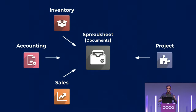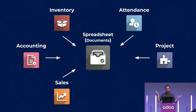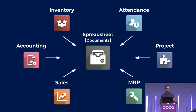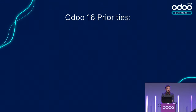For commission tracking, take the sales data and use multipliers and coefficients to calculate it. Any app where you have data — attendance, manufacturing work center productivity — you can feed that into spreadsheets. Basically, any app, any models in Odoo, you can feed into spreadsheets, and it's amazing.